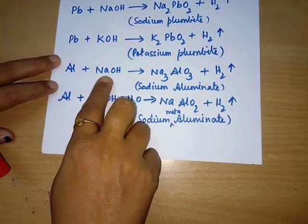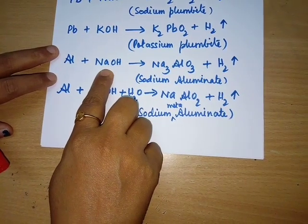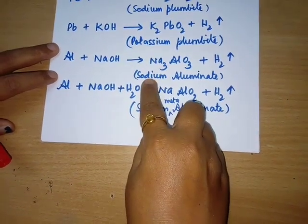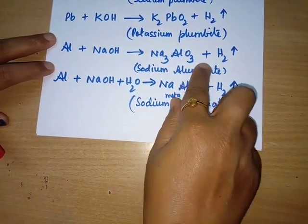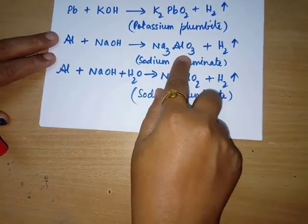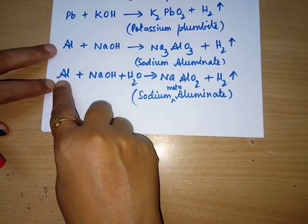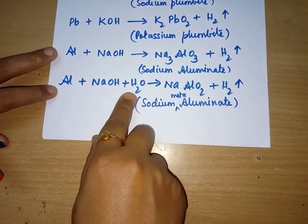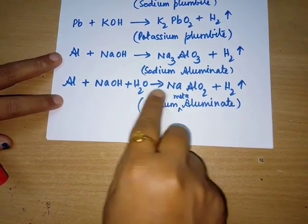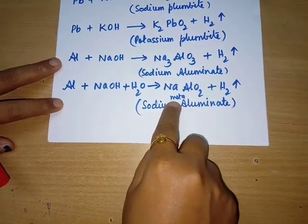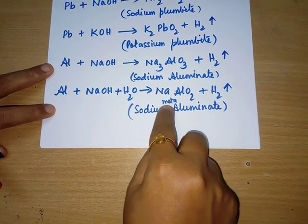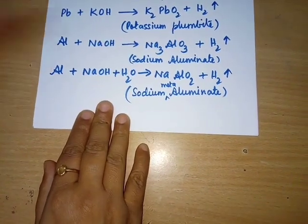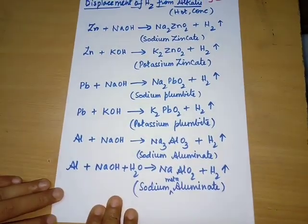Aluminium reacts with hot and concentrated sodium hydroxide to form the soluble salt sodium aluminate (Na₃AlO₃) plus hydrogen. When aluminium reacts with dilute sodium hydroxide, the salt formed is sodium meta-aluminate (NaAlO₂) plus hydrogen. All these equations are not balanced — please balance them.